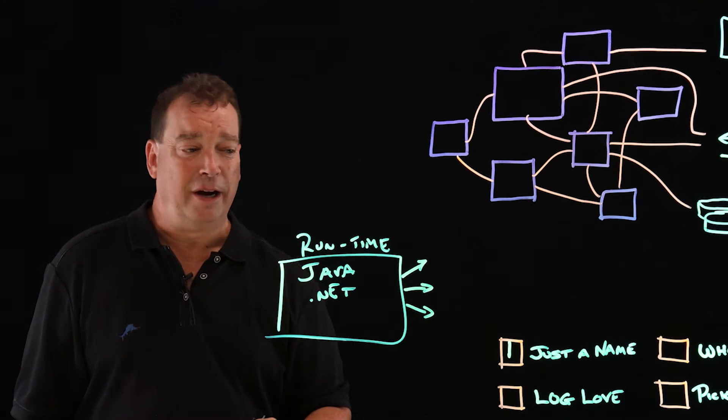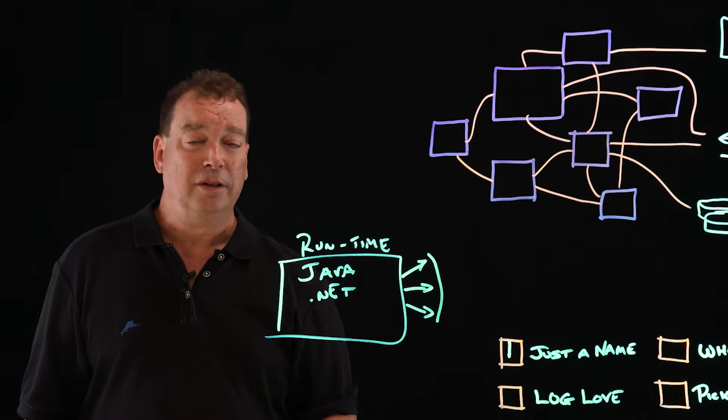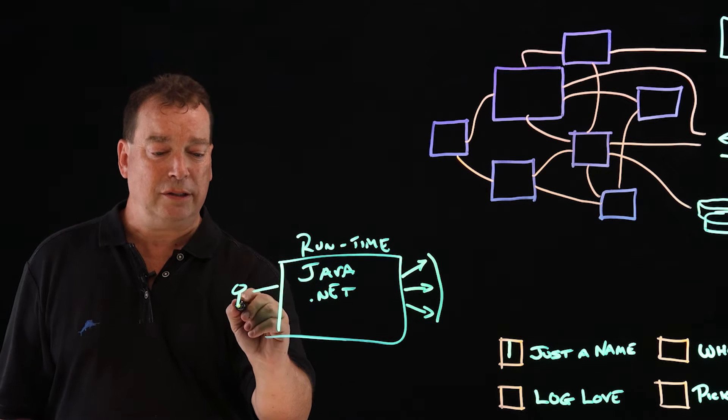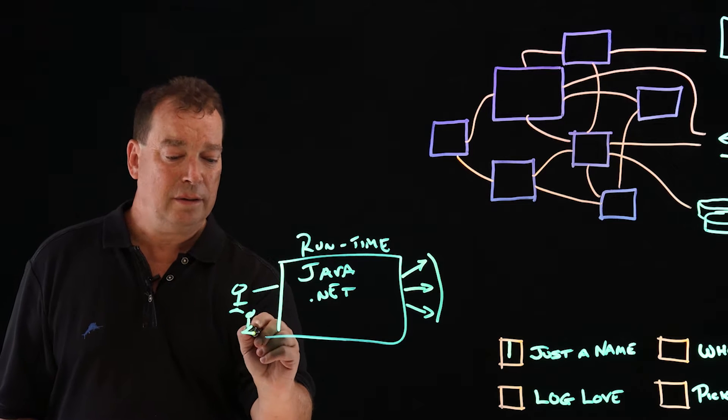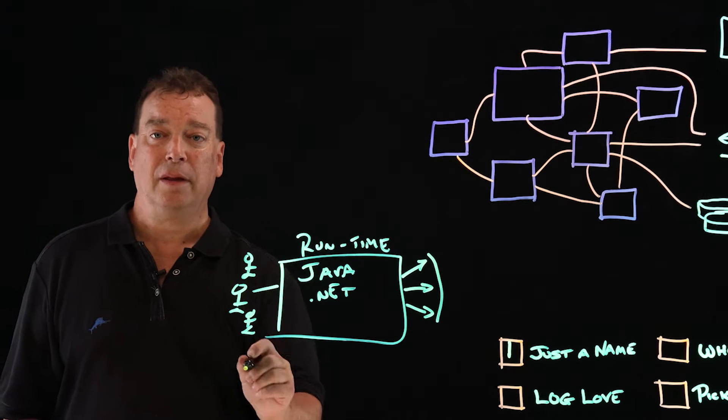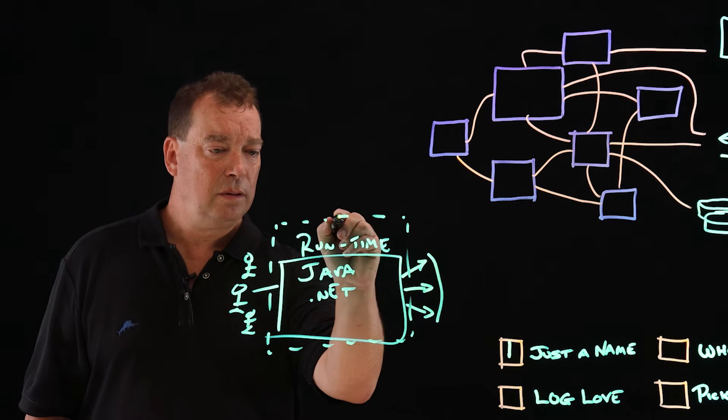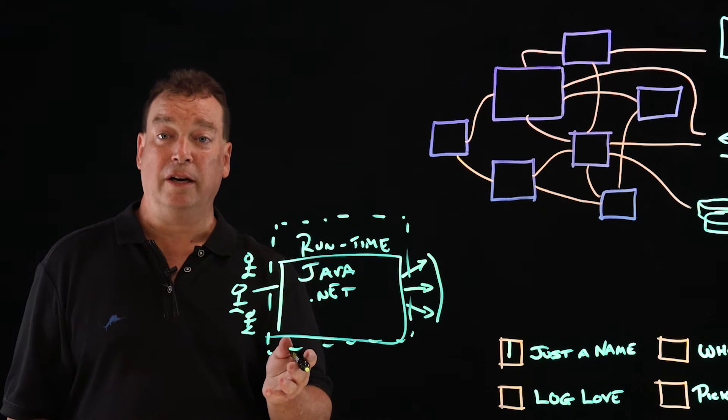But the reason it works for APM is because in the world of runtimes, especially monolithic runtimes, all your back-end systems are tied to that same runtime, and all your front-end requests are coming into that same runtime. So if you have visibility here, then you can see everything that's going on in your system.